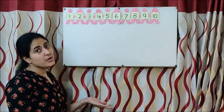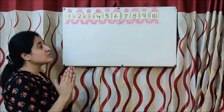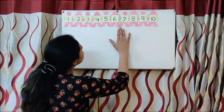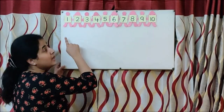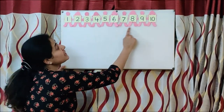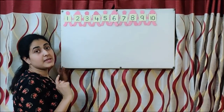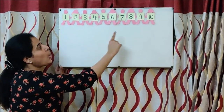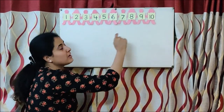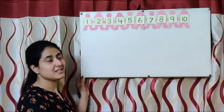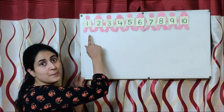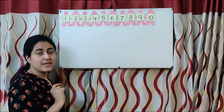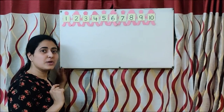So this is our poem. Children, this is our number line. This is called a number line because we have placed all the numbers in order. So this is your number order. Children, you can also make a number line like this at home, and sing the poem with it.